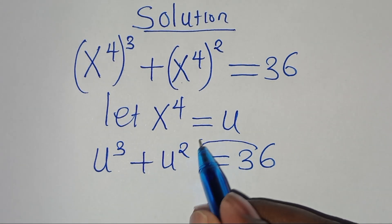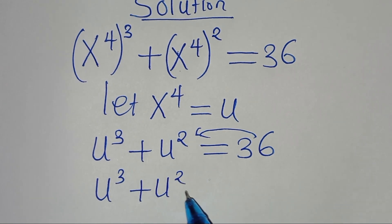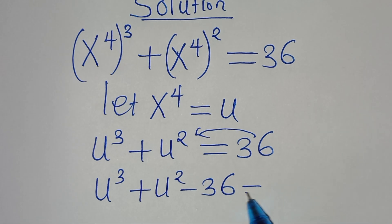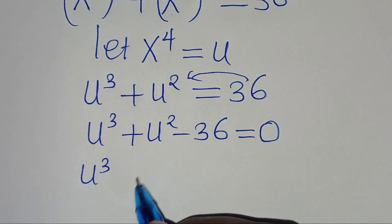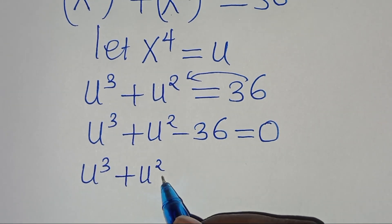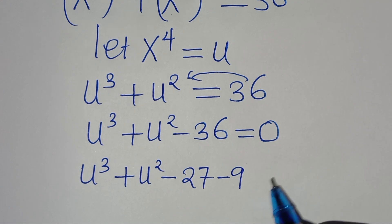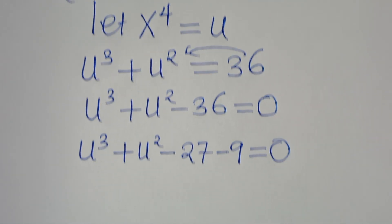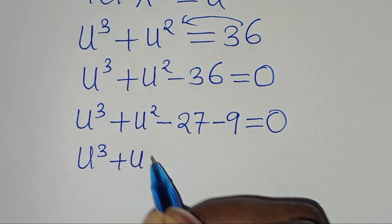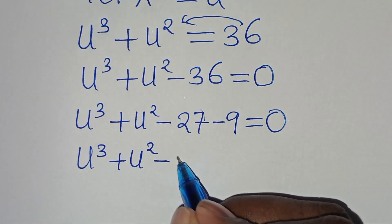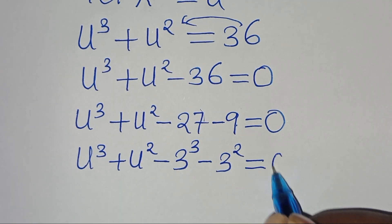Let's take 36 to the left-hand side, so that now we have u to the power of 3 plus u to the power of 2 minus 36, this is equal to 0. We can express this as u to the power of 3 minus 27, plus u to the power of 2 minus 9, which is the same as u cubed minus 3 cubed, plus u squared minus 3 squared, this is equal to 0.